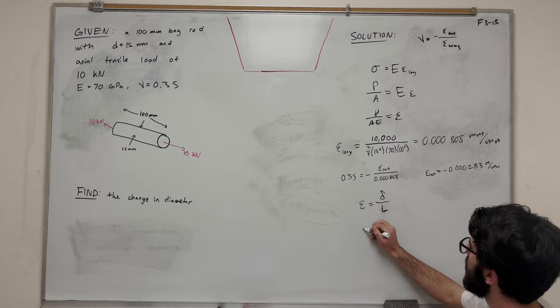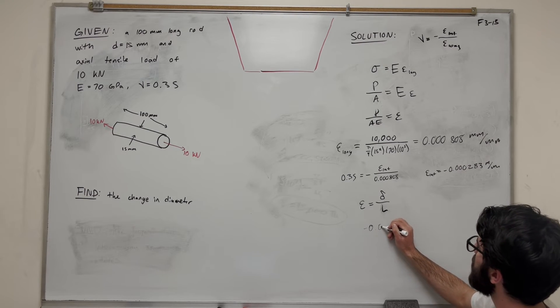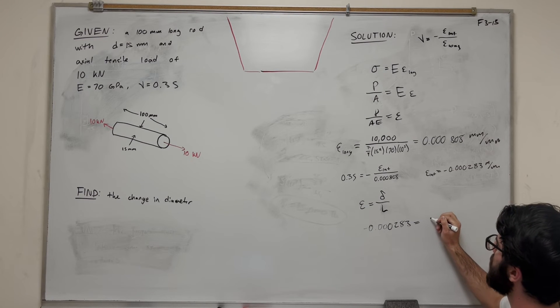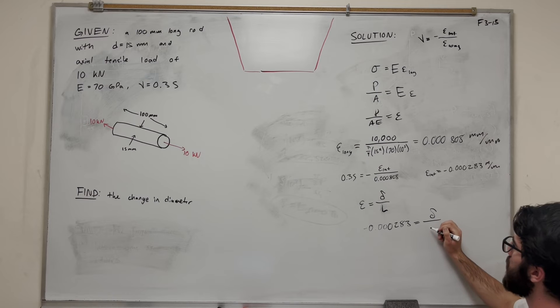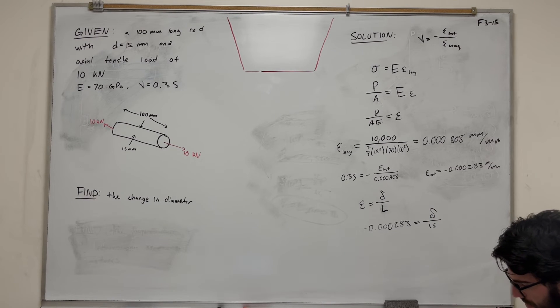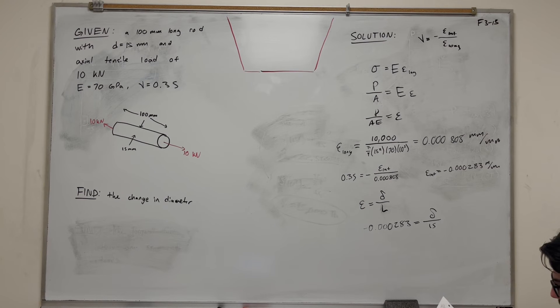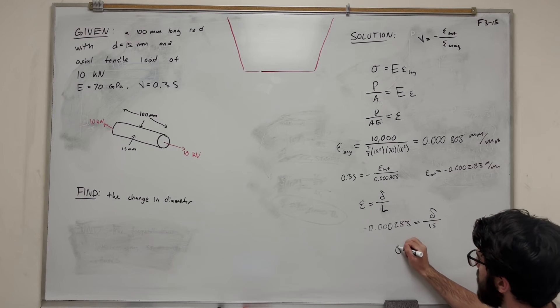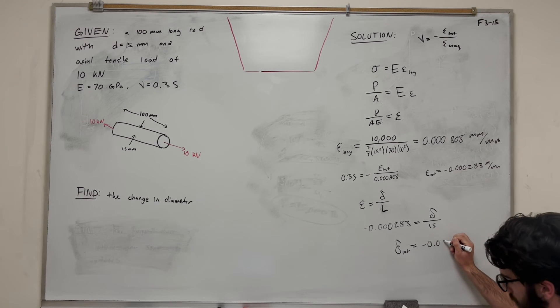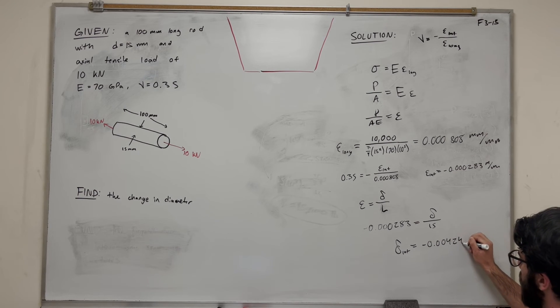Negative 0.0000283 equals delta over L, which is our original diameter, which is 15. So now we just multiply that over, and you get that the change in diameter equals negative 0.00424 millimeters.